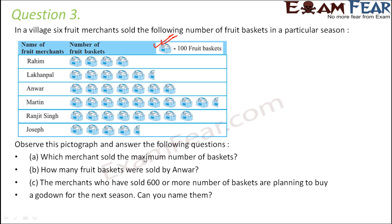First, which merchant sold the maximum number of baskets? Looking at this, for which row do you have the maximum number of baskets? Definitely for this one, and this row belongs to the fruit merchant Martin. So Martin sold the maximum number of fruit baskets.